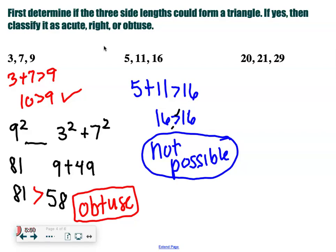Okay, and then our last one. 20 plus 21, is that greater than 29? So it has to be bigger? Yep.